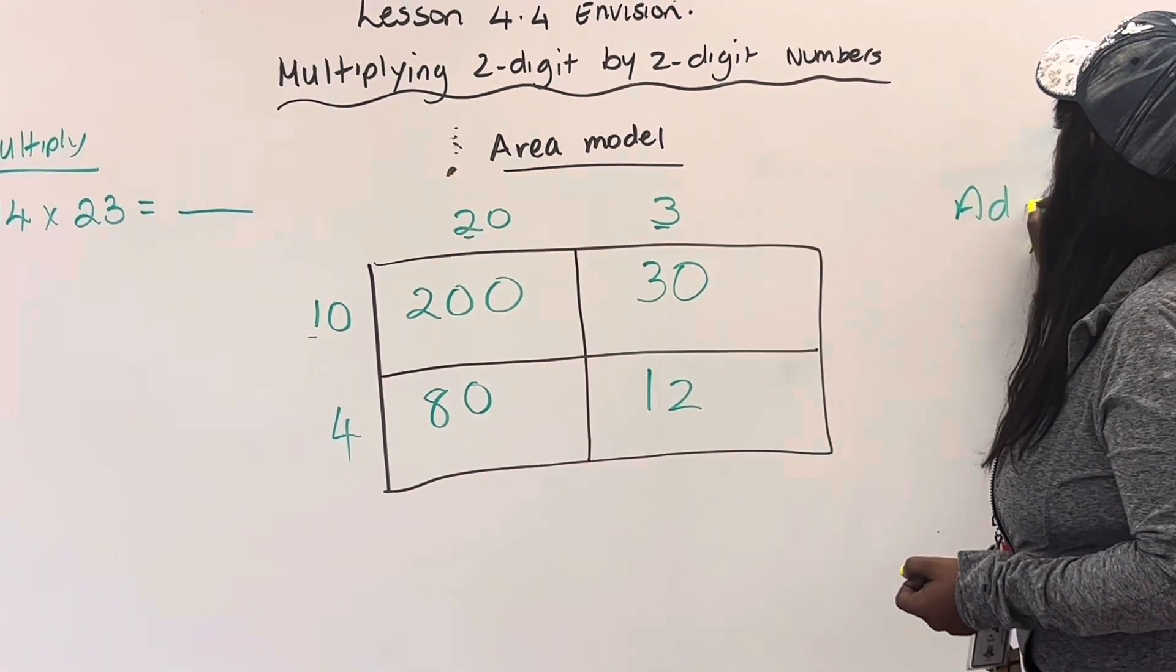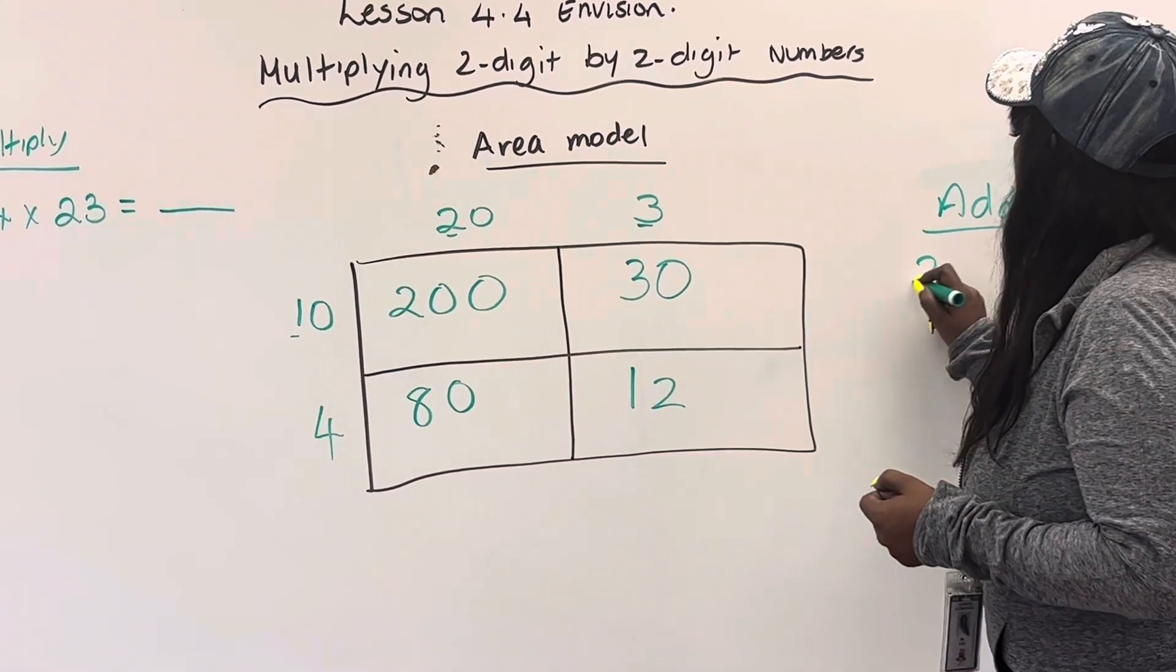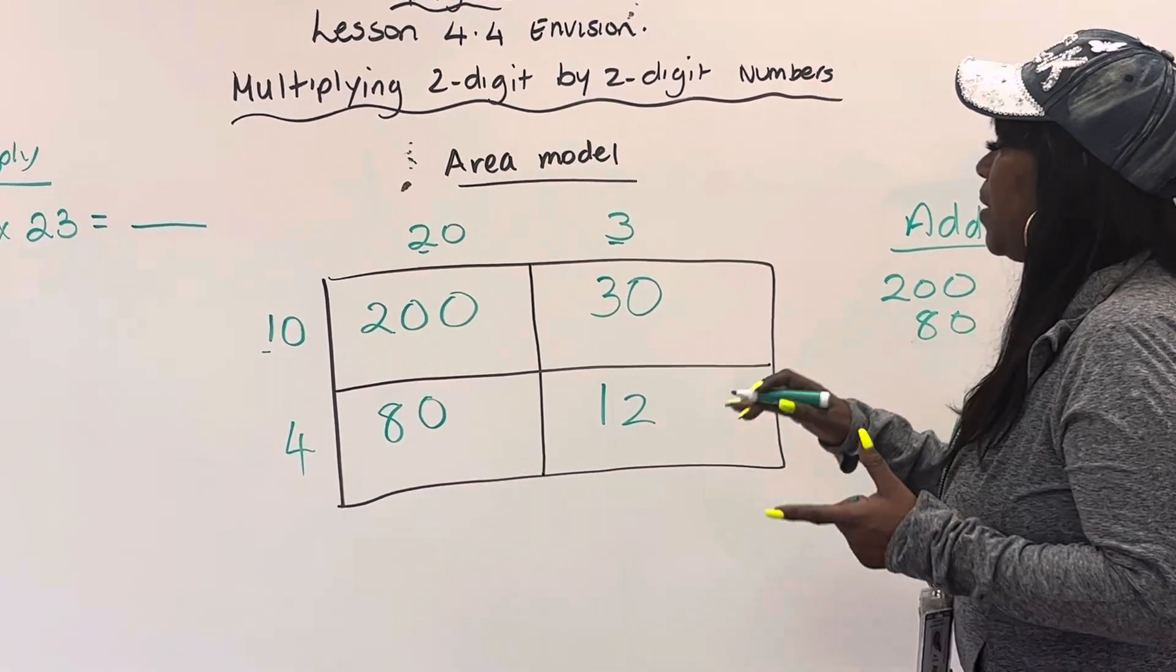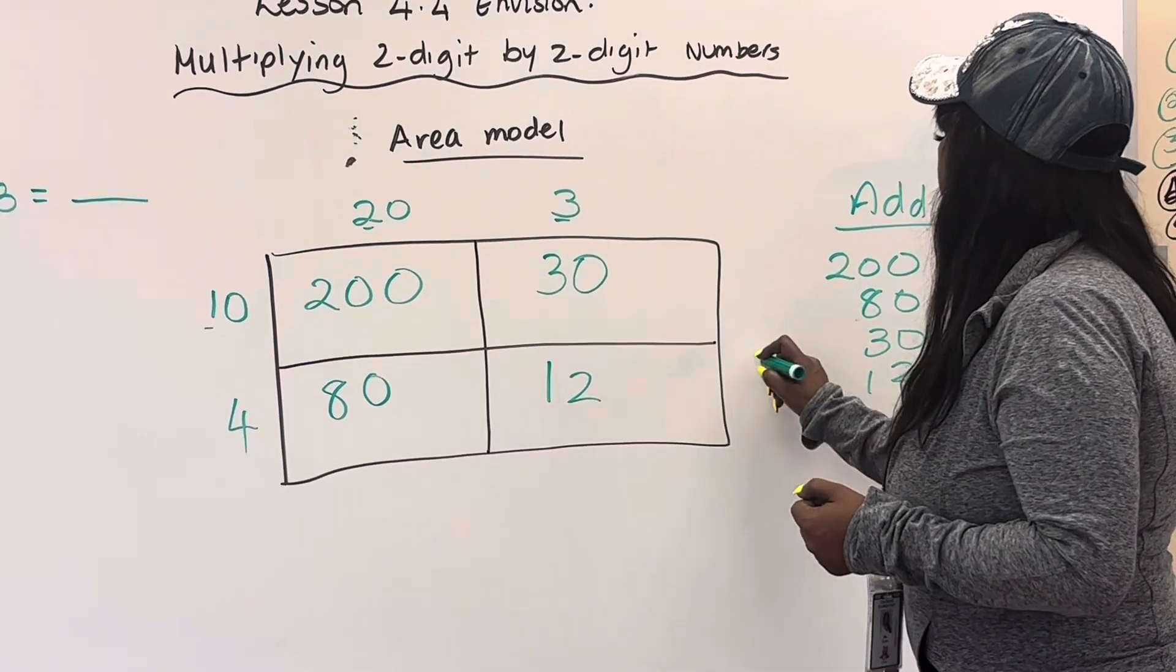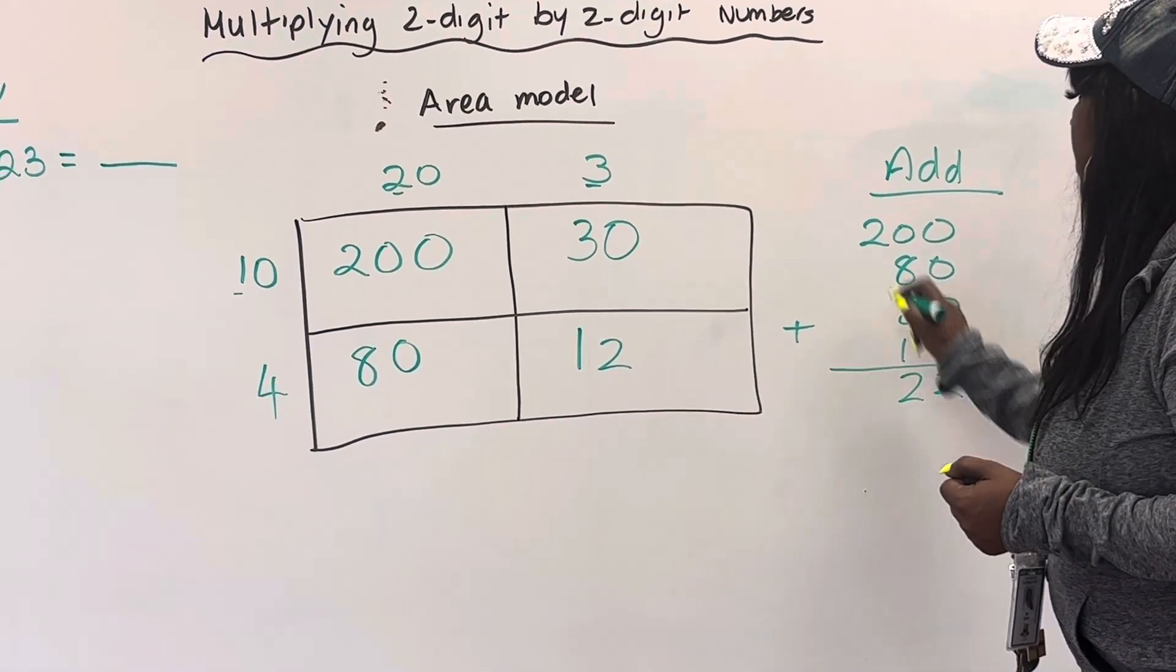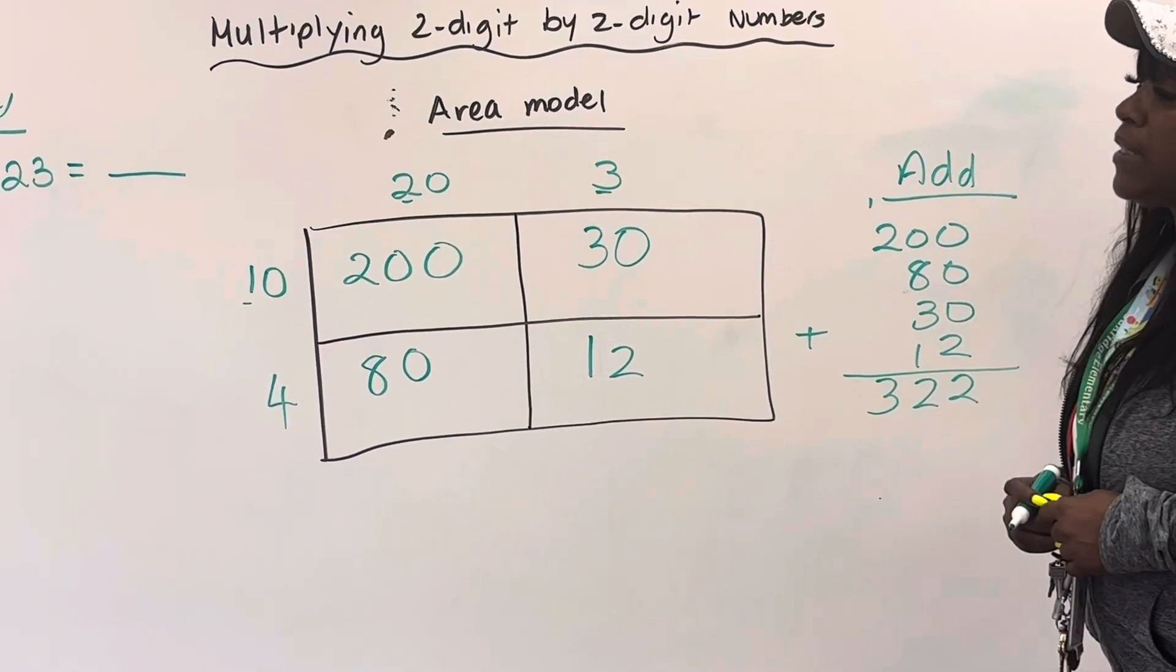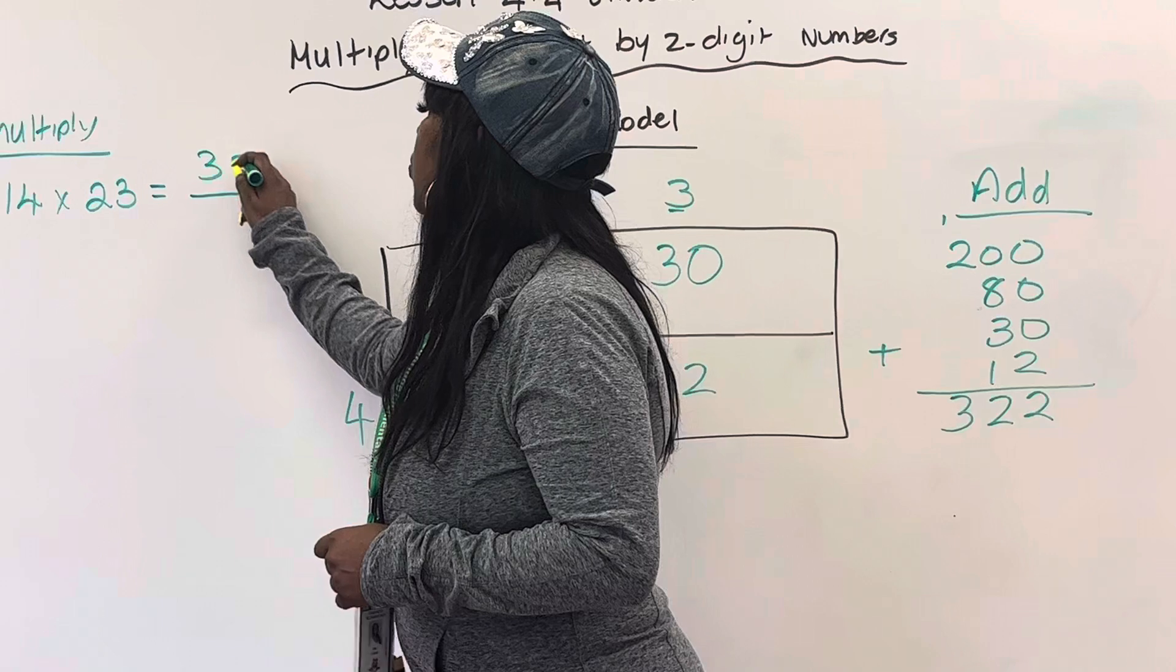Then we go ahead and add everything. So we put the larger number first: 200 plus the 80 plus the 30 and then the 12. 2, 8, 11, 12. Carry the 1. 1 and 2 is 3. So 14 times 23 is 322.